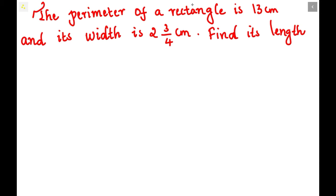They have given the perimeter of the rectangle and the width, that is the breadth of the rectangle. So let us solve it. Let us write the given values first. The breadth or width of rectangle is 2 3/4 cm.